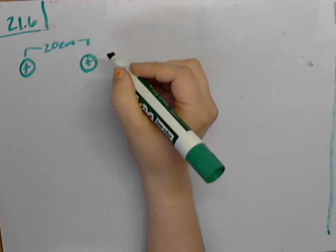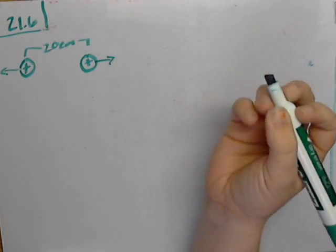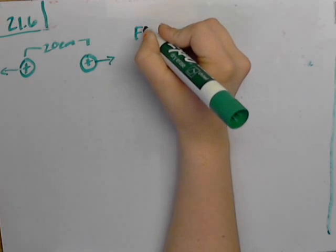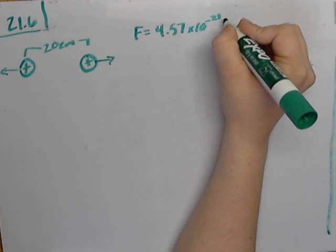Since they're the same charge, they're going to be pushing away from each other. This is the force of repulsion. So F equals 4.57 times 10 to the negative 21 newtons.